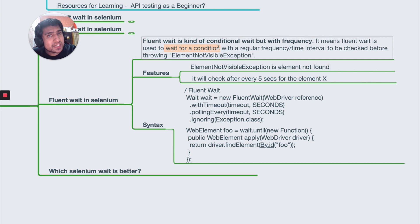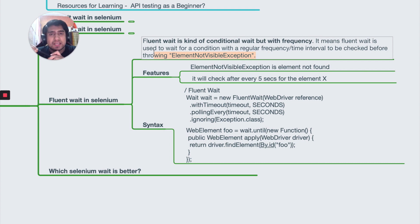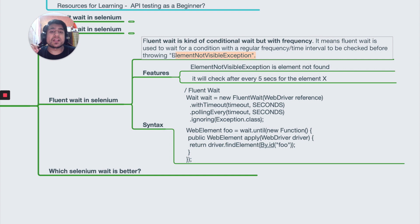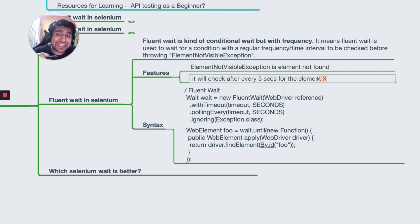Fluent wait is basically used to wait for a particular condition — like we have in explicit wait — but with a regular polling frequency to be checked before throwing any exception. For example, I have a maximum timeout of 10 seconds and I'm checking every 3 seconds if the element is visible, polling again — is the element visible or not? It's checking at intervals. If the maximum timeout of 10 seconds is reached, it will throw an ElementNotVisibleException.